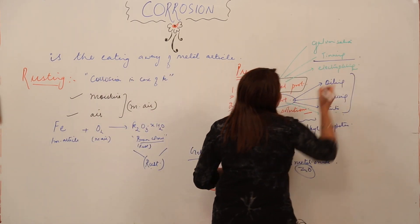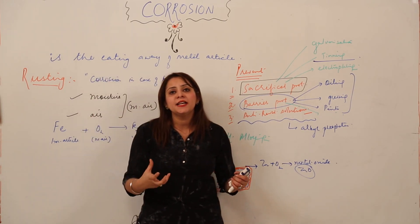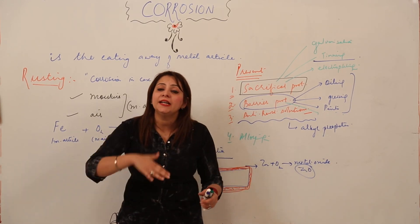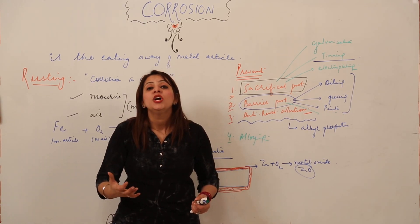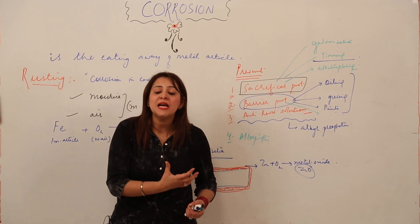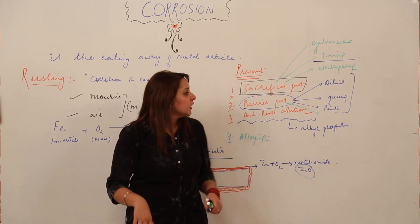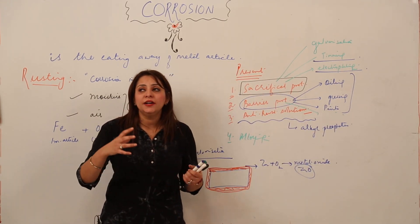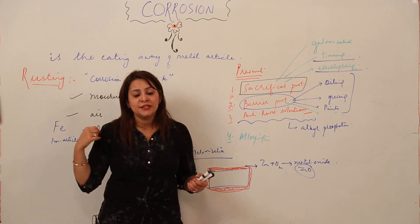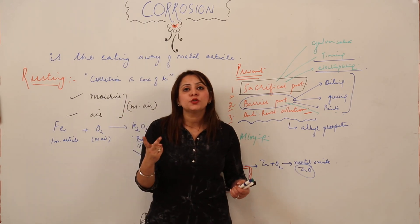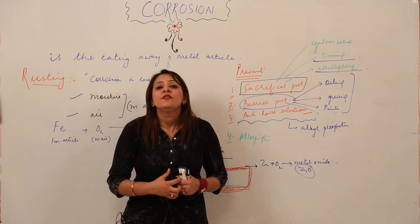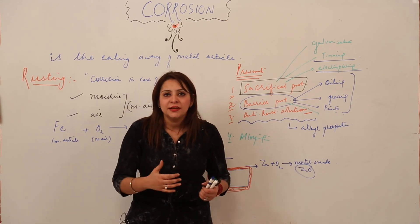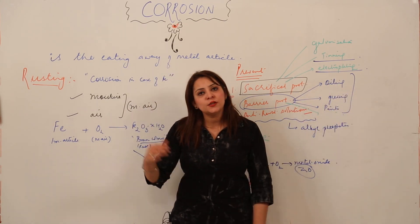The second sacrificial method is tinning — we dip the iron article in a solution of tin, and after dipping, it gets covered with tin. Tin protects the iron from rusting because it does not allow moisture to pass through, so moisture cannot combine with iron and there is no rusting. The third method is electroplating. Two metals that prevent rusting of iron by electroplating are copper and chromium. By the process of electrolysis, a layer of copper is deposited on the iron article, preventing it from rusting.